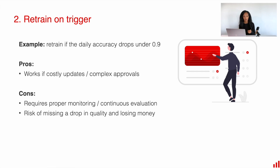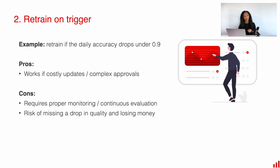The good things here are that if you have a complex approval process, or if retraining costs you quite a lot, you always understand why you retrain your model and you do not do it for nothing. However, this strategy requires a proper monitoring system, because you need to build your retraining strategy based on the alerts you get out of the monitoring system, and your monitoring system should be ready for that. You also have a risk of missing a drop in quality and losing money if you cannot detect the very beginning of the model quality drop process.